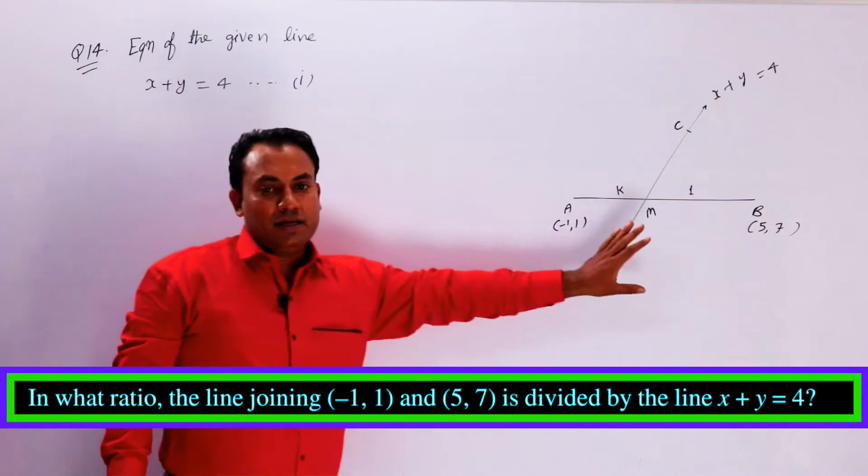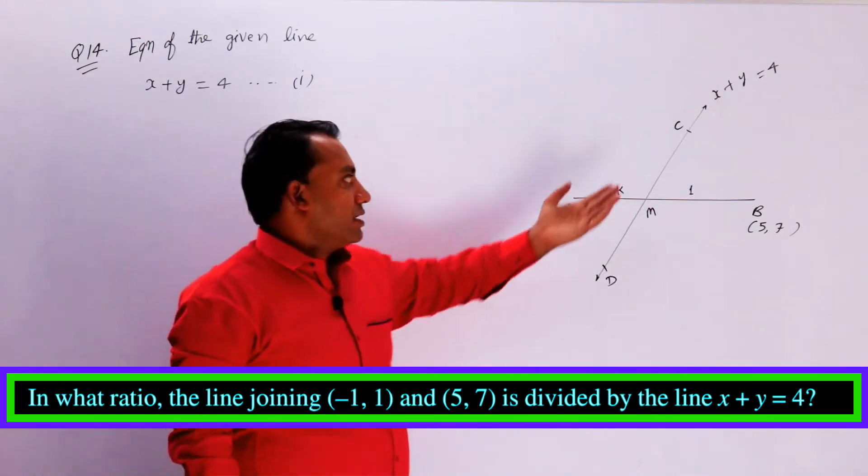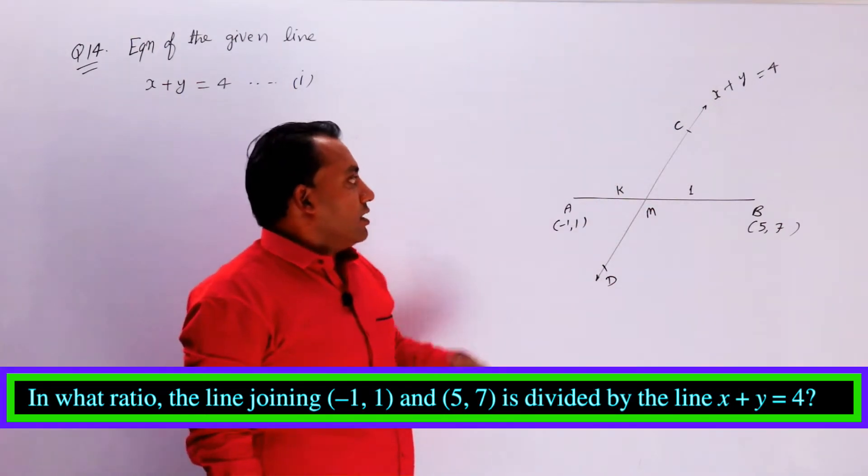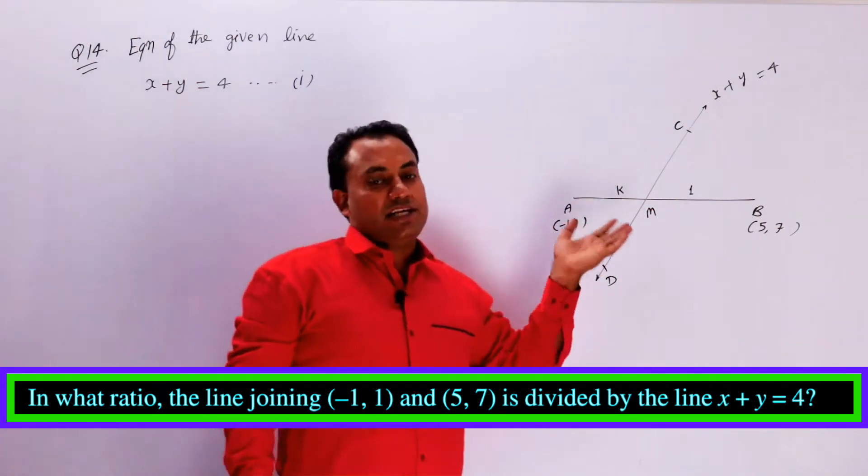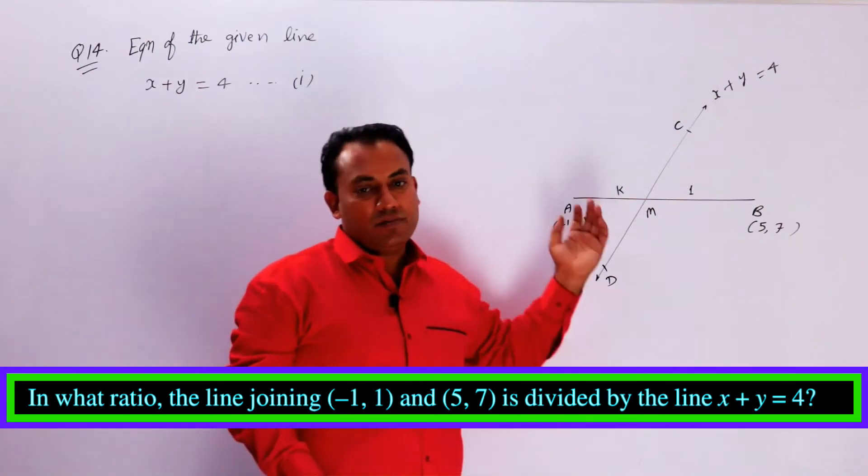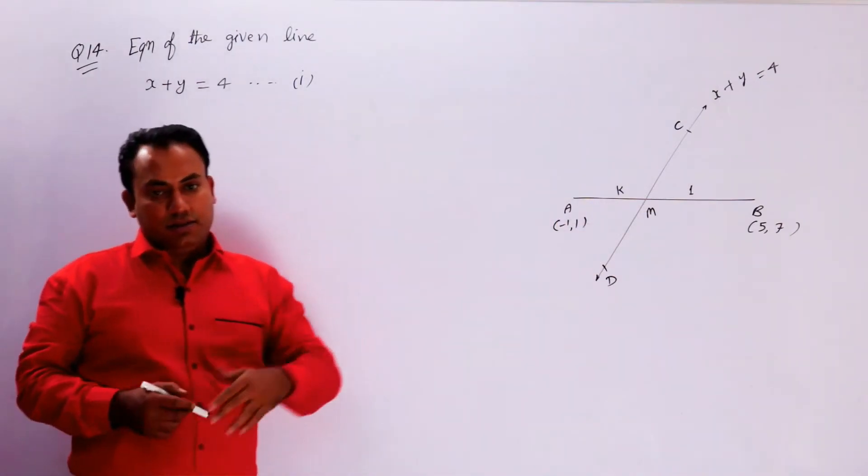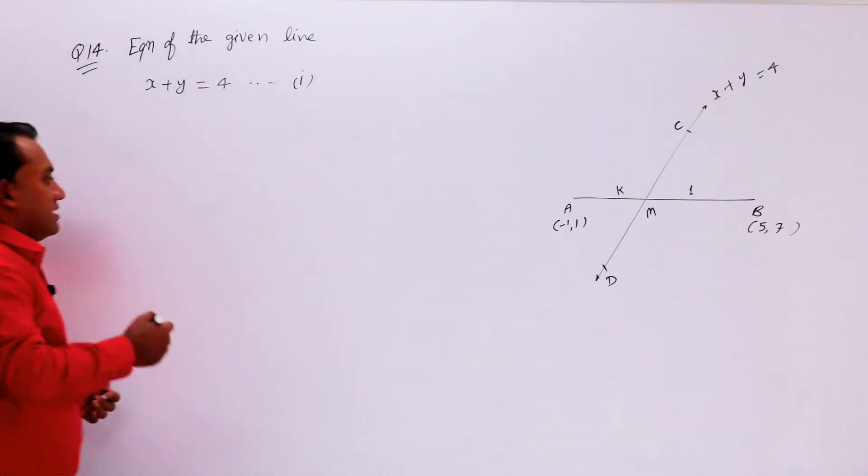In this question, the line CD has been made with the equation x + y = 4. This is point A and B, which we can divide by the line. We can divide by k ratio 1.